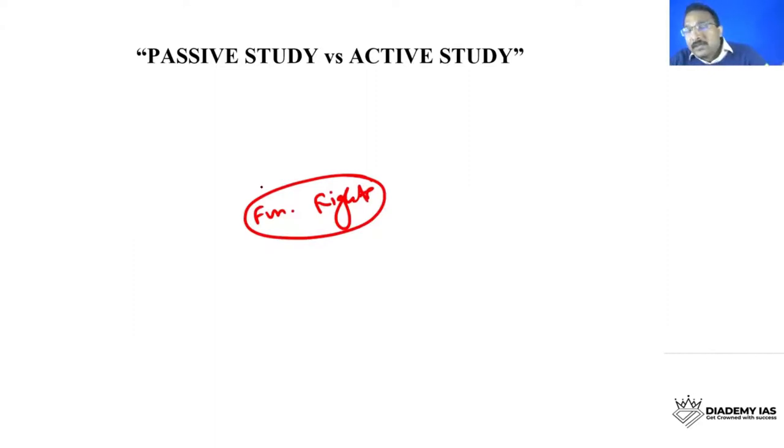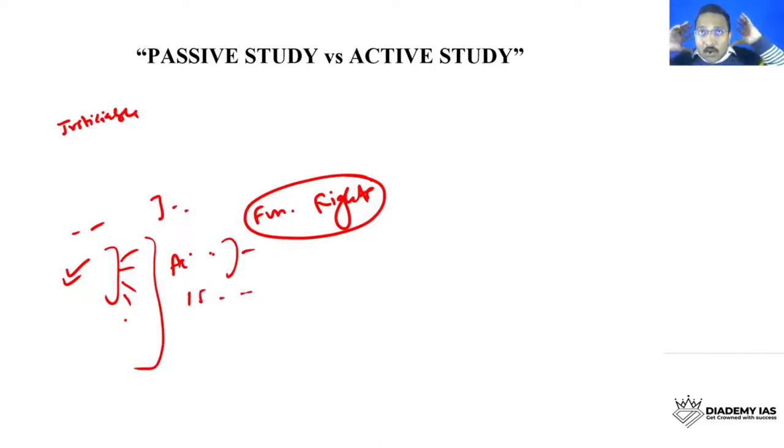You pick one A4 size paper and on that A4 size paper, take it in the landscape format and write fundamental rights. Suppose this is the paper, in the center you are writing fundamental rights. Now you will start thinking whatever you know already about the fundamental rights. What is the meaning of fundamental rights? Some important features are they're justiciable. What are the rights of individual? What are the rights of a state? Which all articles are there? So what you're doing, you're just writing.